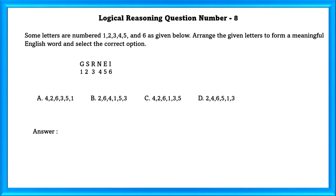Logical Reasoning Question Number 8. Some letters are numbered 1, 2, 3, 4, 5, and 6 as given below. Arrange the given letters to form a meaningful English word and select the correct option. The meaningful word that can be formed using these letters are Singer, which is present in the B option.